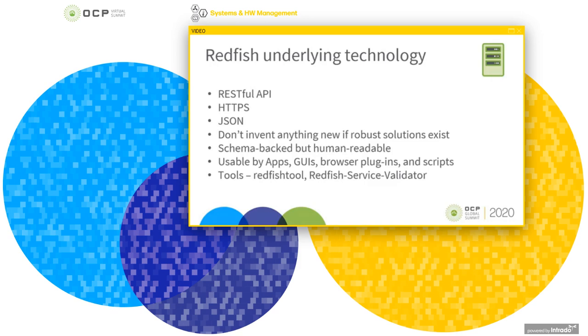HTTPS, the web protocol, is used so communication is encrypted using TLS. JSON provides modern language support. All of these are well-known and widely used. System management can then be performed using the same skill set and tool chain as other IT tasks. Redfish believes: don't invent anything new if robust solutions exist.